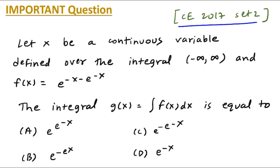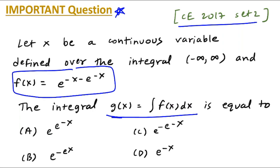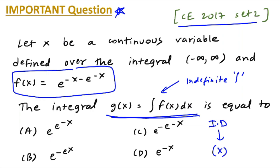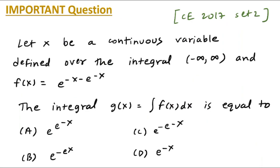Moving forward to the next gate question from Civil Engineering 2017 Set 2 gate paper — mark this question as important. Let x be a continuous variable defined over the interval (minus infinity, infinity), and f(x) equals e raised to minus(x minus e raised to minus x). The integral g(x) equals integral of f(x) dx — what is it? Note that this is an indefinite integral, which means the answer won't be a constant but in terms of x. This is the difference between indefinite and definite integrals.